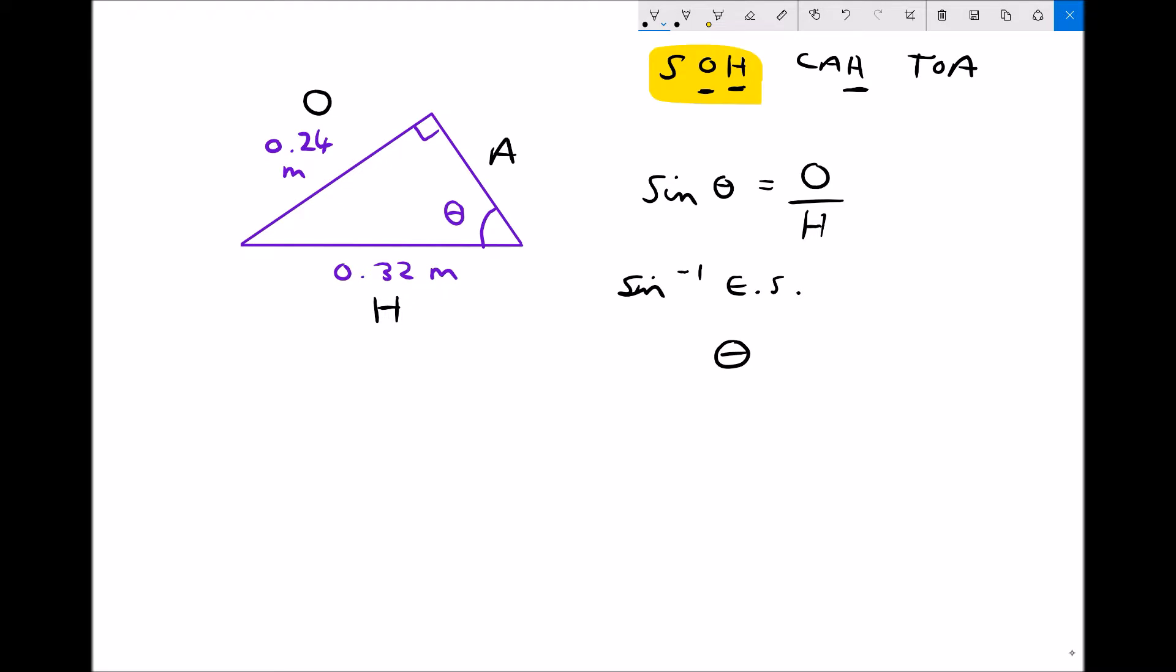And then we're going to do sine to the minus 1 of the right-hand side. The way that we would write this is sine to the minus 1 in brackets, opposite over hypotenuse. The reason being is we're doing sine to the minus 1 of all of the right-hand side.